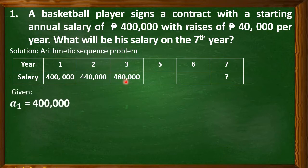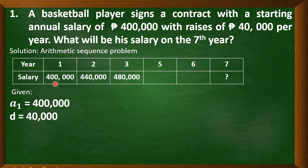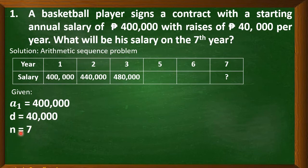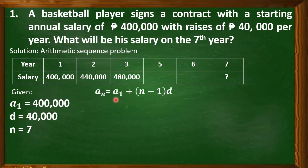Now we have to determine the given data. The first term is 400,000. The common difference is 440,000 minus 400,000, that is 40,000 — which is simply the amount of raise per year. And lastly, we have N. Seventh year, so our N is 7. Now copy the N-term formula: A sub N equals A sub 1 plus quantity of N minus 1 times D.